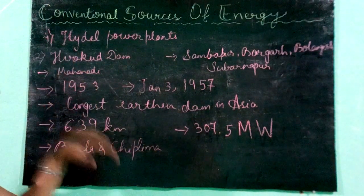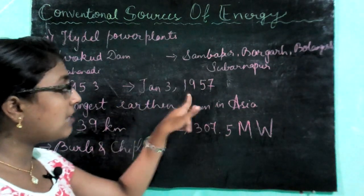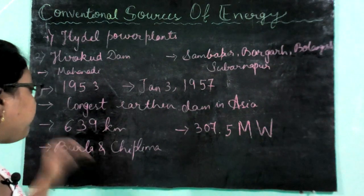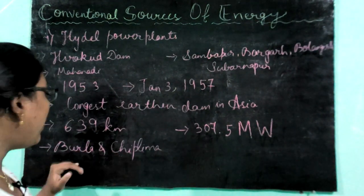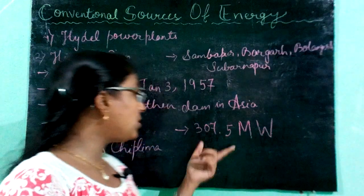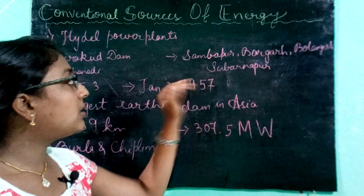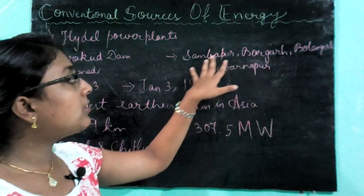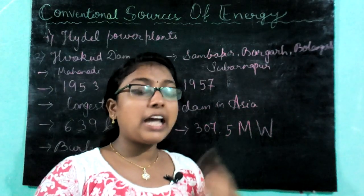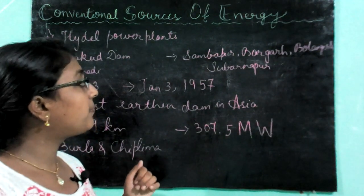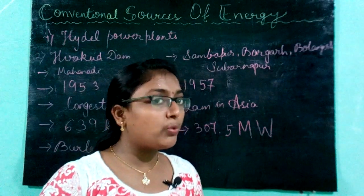To revise: Hirakud Dam is built across the Mahanadi River. Construction was completed in 1953 and formally inaugurated by Jawaharlal Nehru on January 3, 1957. It is the longest earthen dam in Asia, with a shoreline of 639 km. It supports two hydral power plants — one at Burla and one at Chiplima — with a capacity of 307.5 megawatts. It provides irrigation to Sambalpur, Bargad, Balangir, and Subarnapur, and has two observation towers — Gandhi Minar at Burla and Nehru Minar at Hirakud. It also protects Cuttack and Puri from floods.